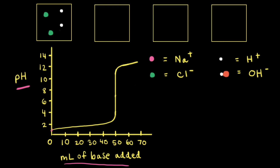Let's think about the first point on our titration curve — zero milliliters of base added — meaning we're starting with only hydrochloric acid. In the particulate diagram, there are two H⁺ particles and two chloride anion particles.